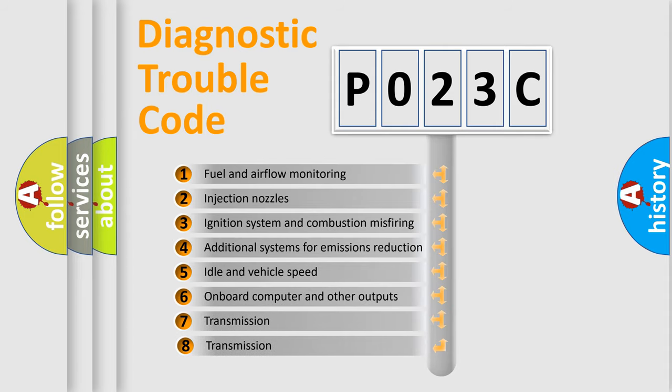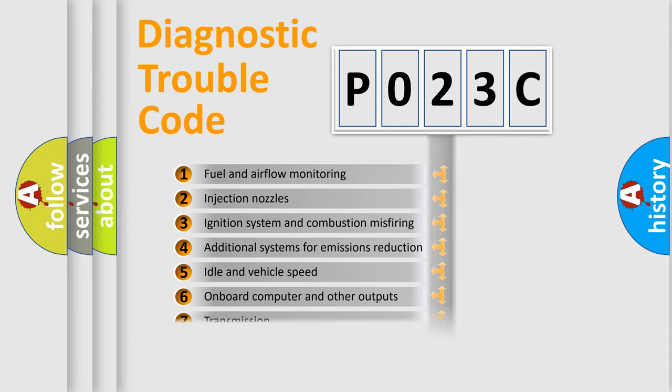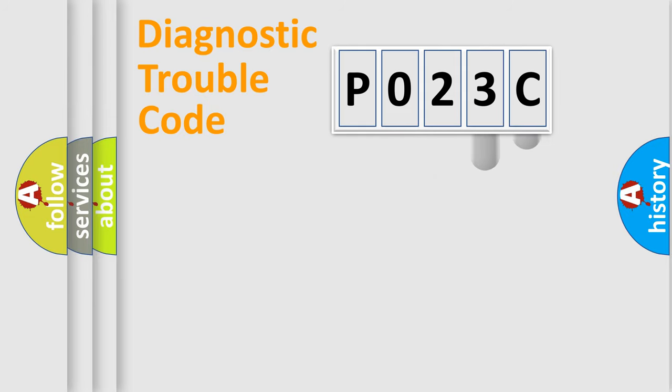The third character specifies a subset of errors. The distribution shown is valid only for the standardized DTC code. Only the last two characters define the specific fault of the group.